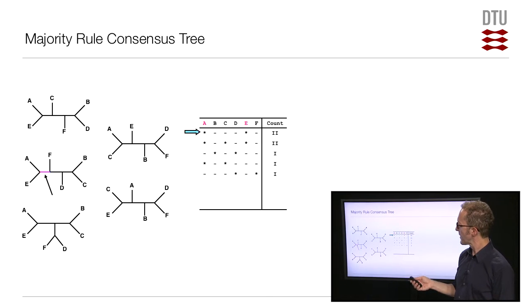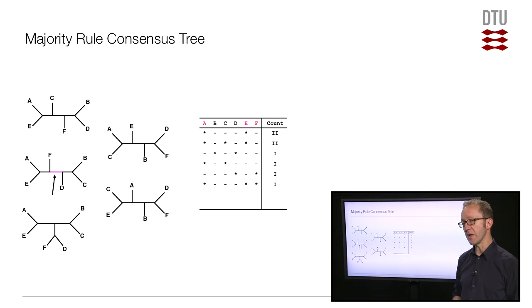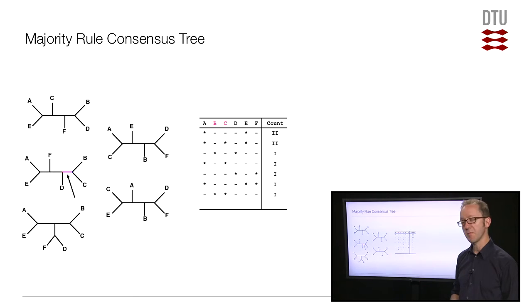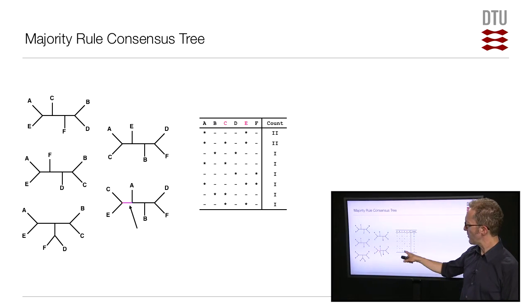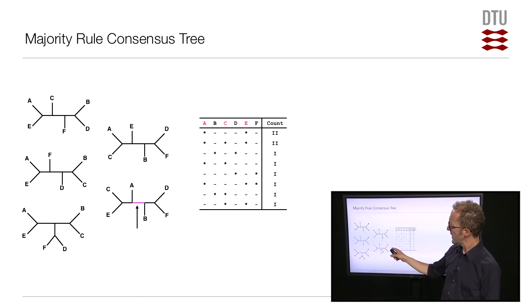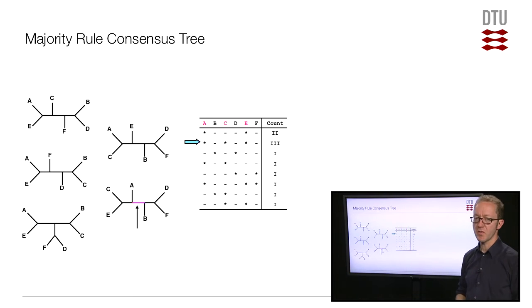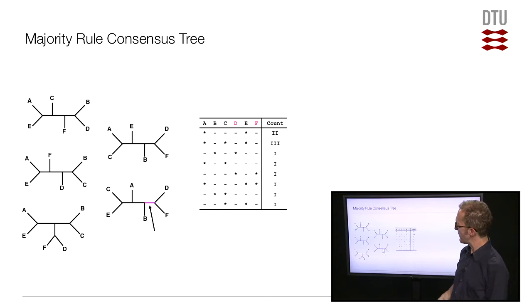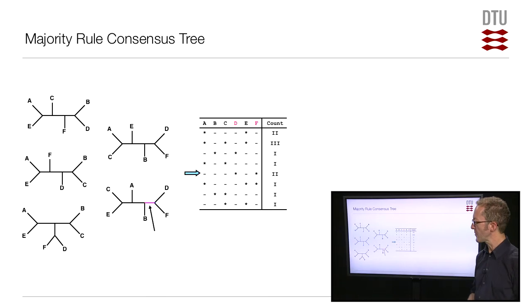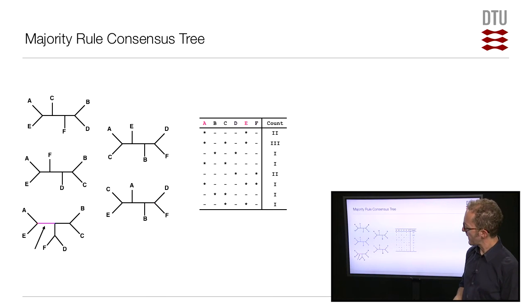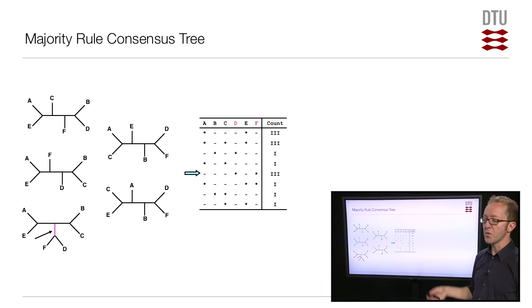Tree three: A and E — seen before, increase the count. Next: A, E, and F — not seen before, add to table. Third: B and C — not seen before, add to table. Tree four: C and E — not seen before, add it. Next: A, C, and E — seen before, count now at three. Third: D and F — seen before, increase its count. Tree five: A and E — seen before, increase the count. Next: D and F — seen before, increase the count. Third: B and C — seen before, increase the count.